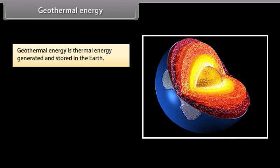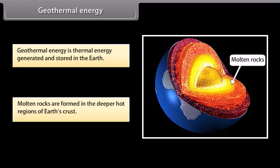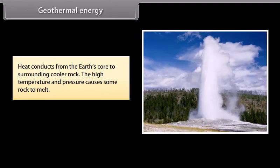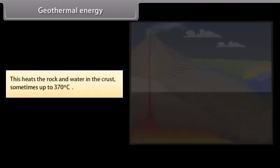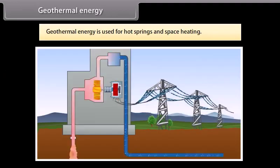Geothermal energy. Geothermal energy is thermal energy generated and stored in the earth. Molten rocks are formed in the deeper hot regions of the earth's crust. Heat conducts from the earth's core to the surrounding cooler rock. The high temperature and pressure causes some rock to melt, heating the rock and water in the crust, sometimes up to 370 degrees Celsius. Geothermal energy is used for hot springs and space heating.